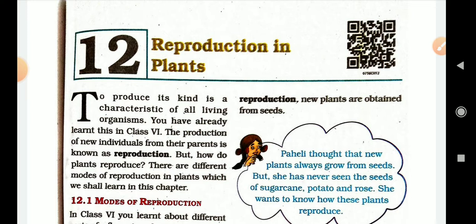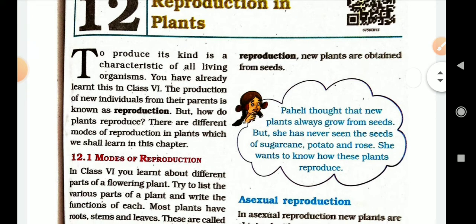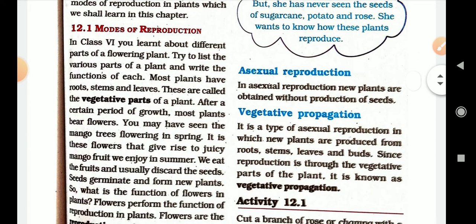Figure 12.1, modes of reproduction. In class 6, you learnt about different parts of a flowering plant. Try to list the various parts of a plant and write the function of each. Most plants have roots, stems, and leaves — these are called the vegetative parts of the plant.